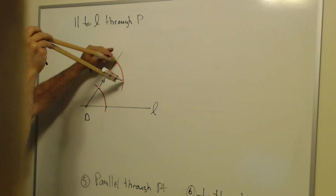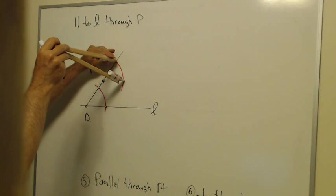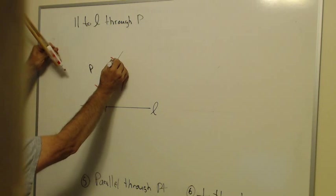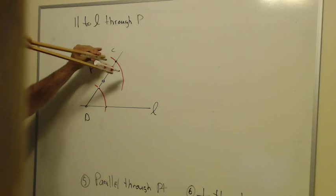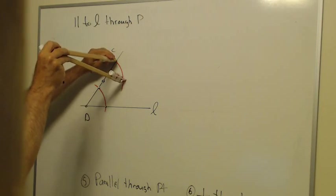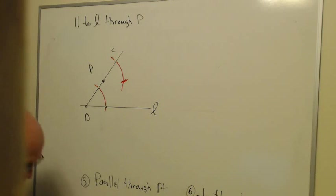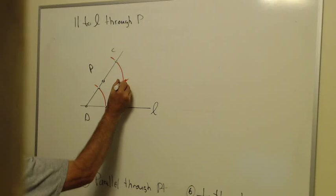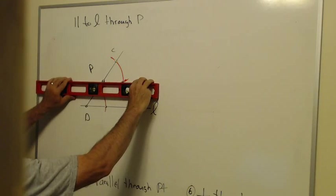So I'll put the pointy end on the right up here on this point and draw an arc that crosses my other one. Now I'll take the straight edge and connect those two points.